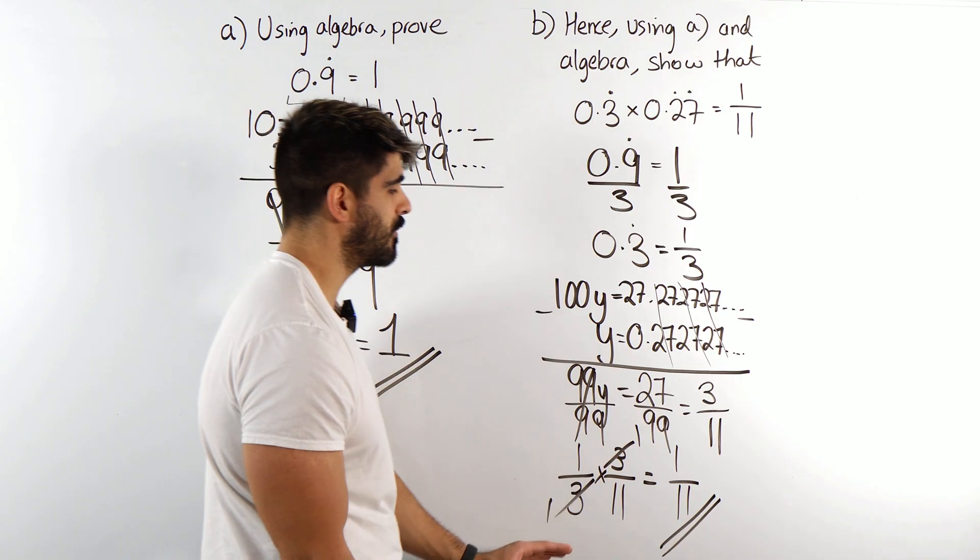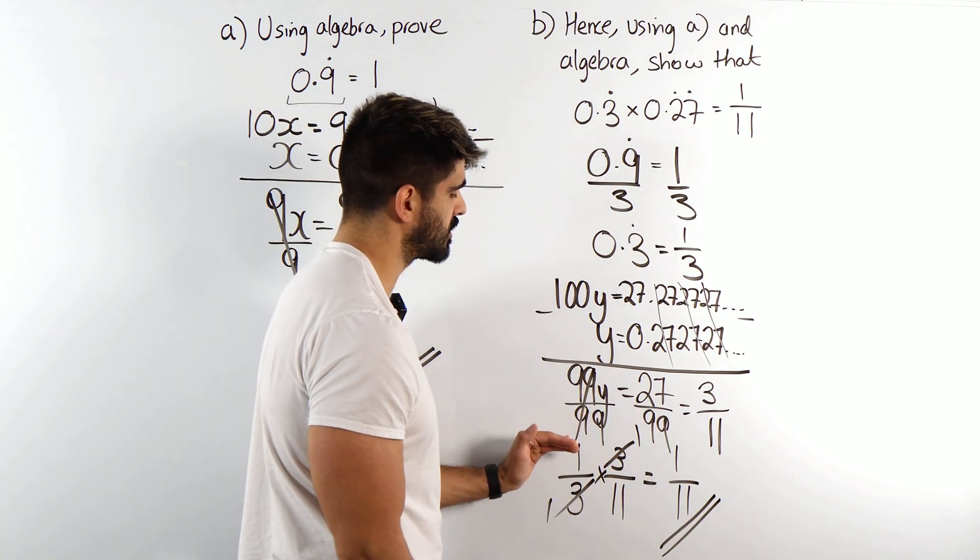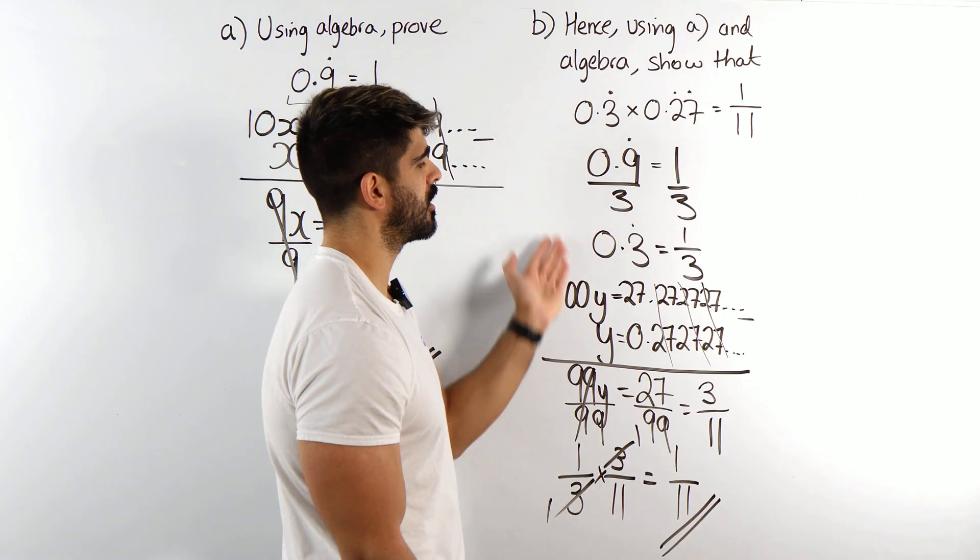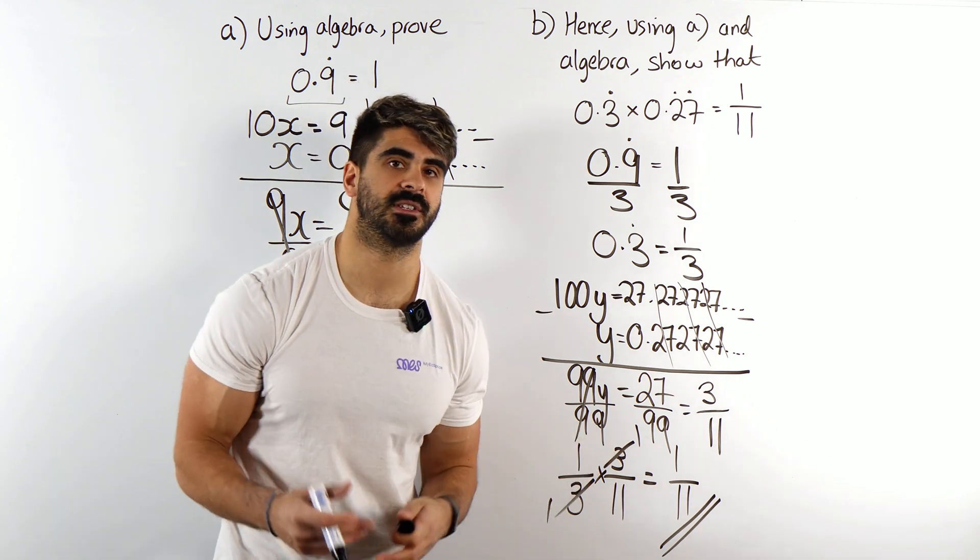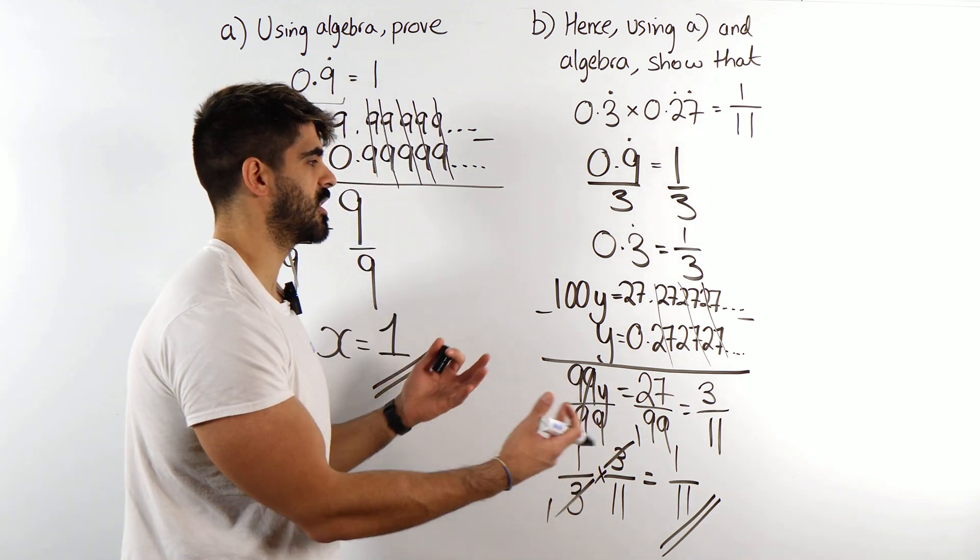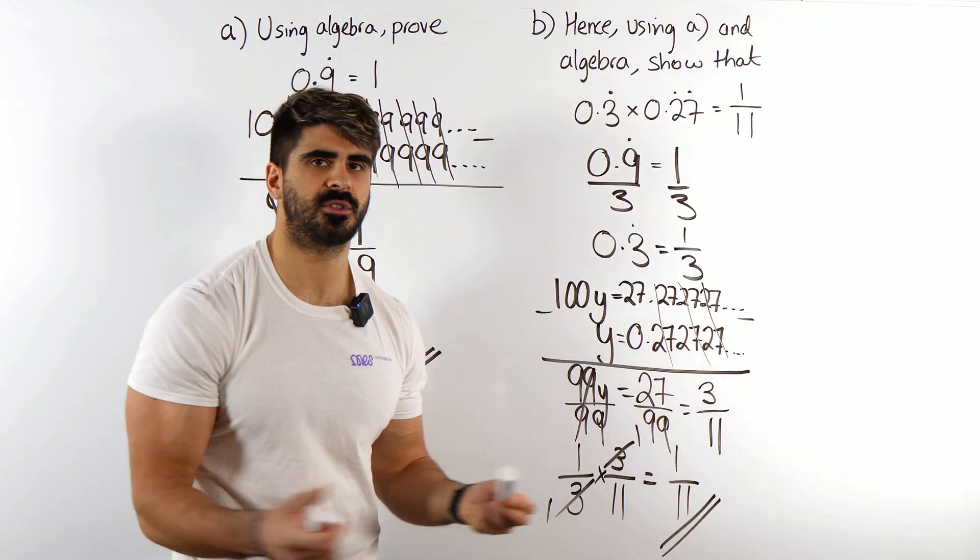So a question like this could be worth 4 marks in your example. Because you're doing this process, you're doing cancellations, you use part A as well. In total, we've got a 7 mark question in recurring decimals. But this basically shows you guys everything you need to know when it comes to recurring decimals.